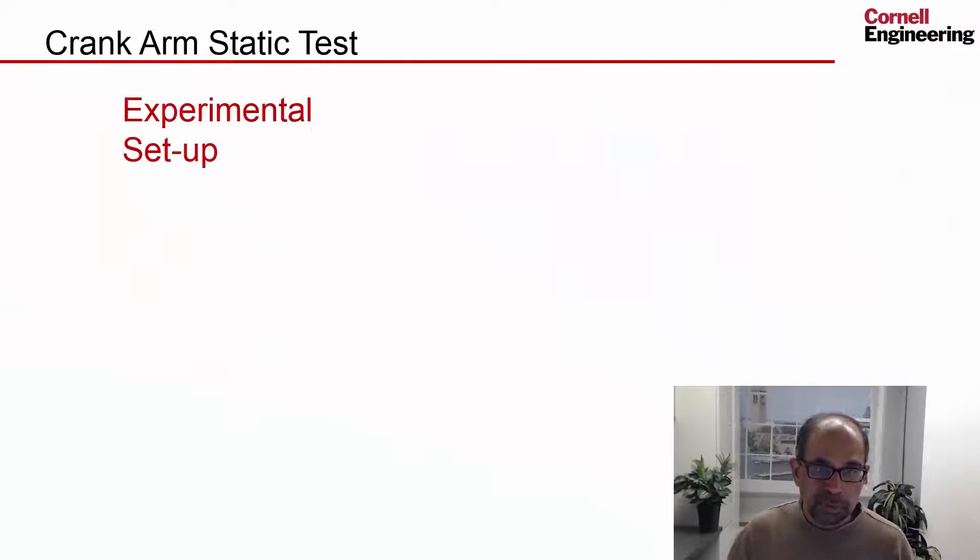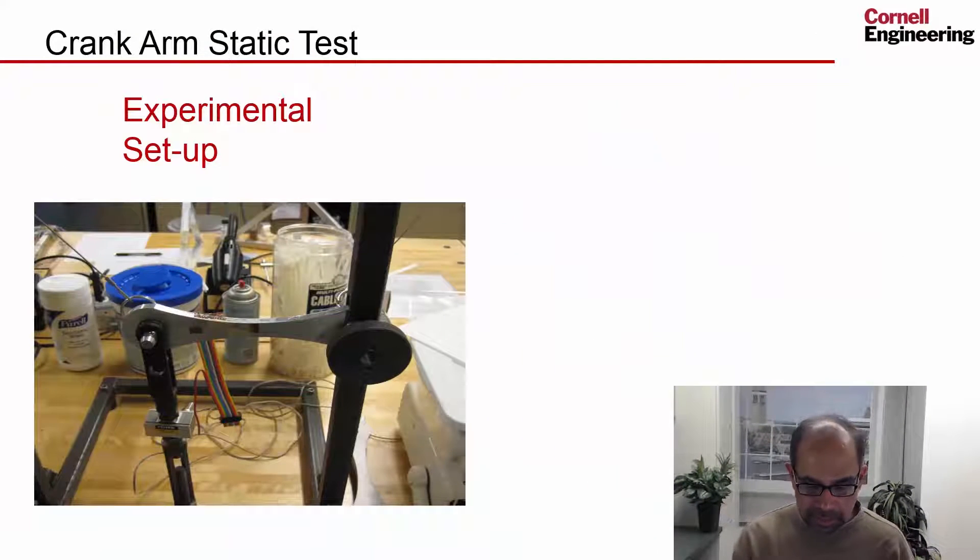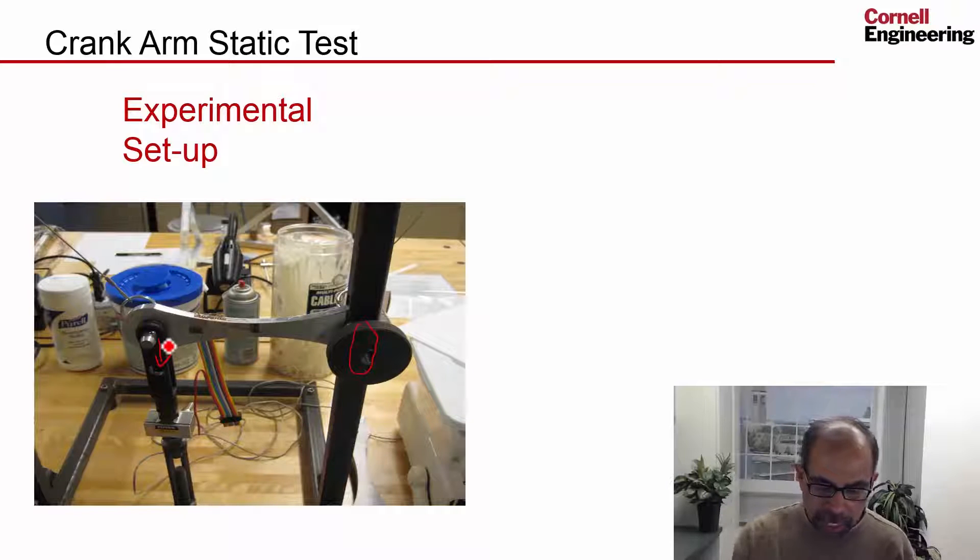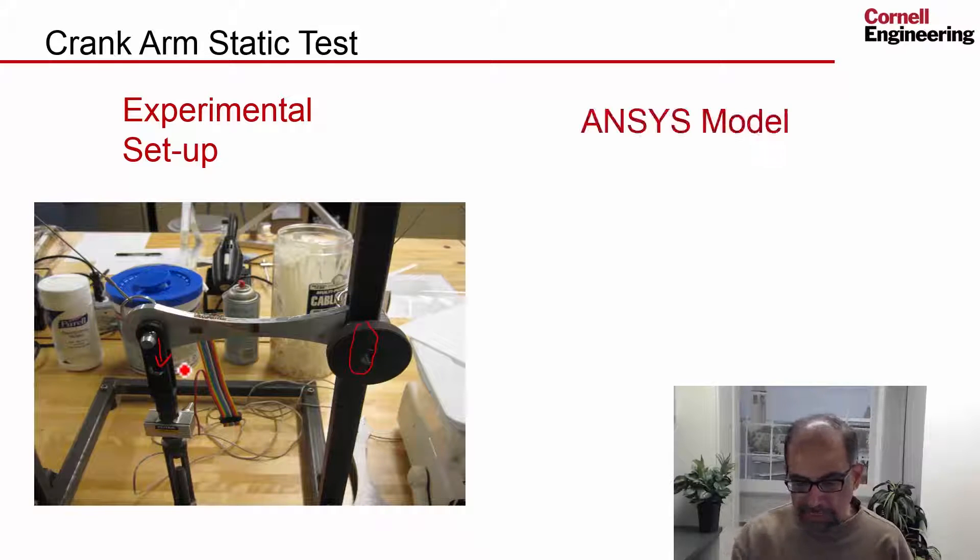This module considers an ANSYS model of that setup. The experimental setup looks like this - this is one of the designs of the crank tested. You fix it at this end over here and you apply a load over here. It's going to be downwards. And we will do an ANSYS model that corresponds to this setup.